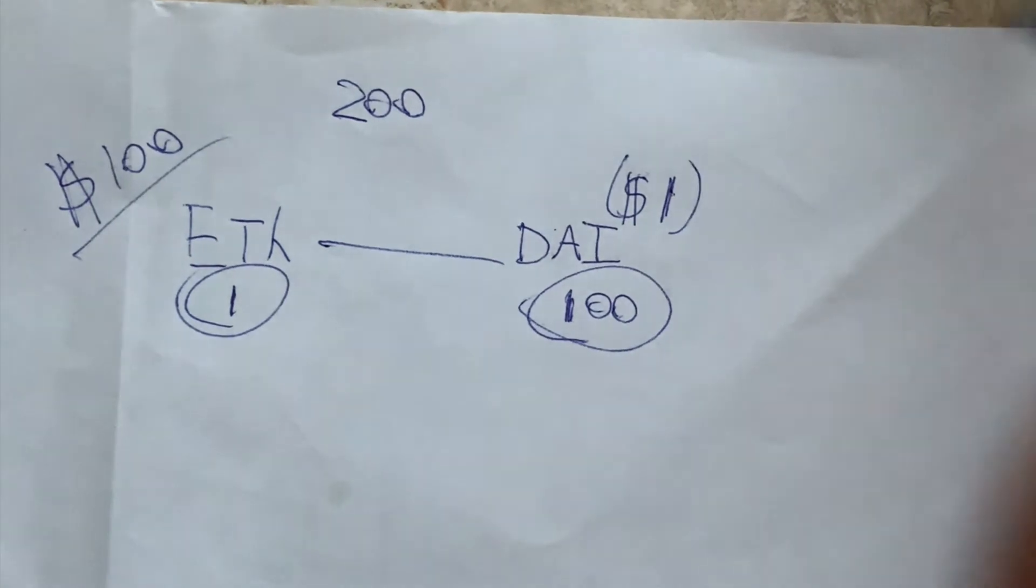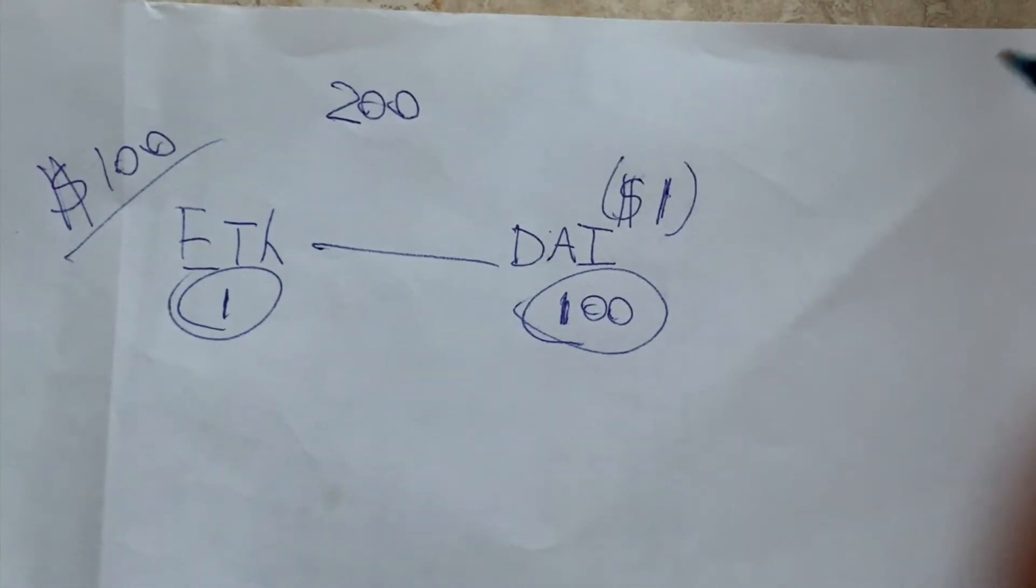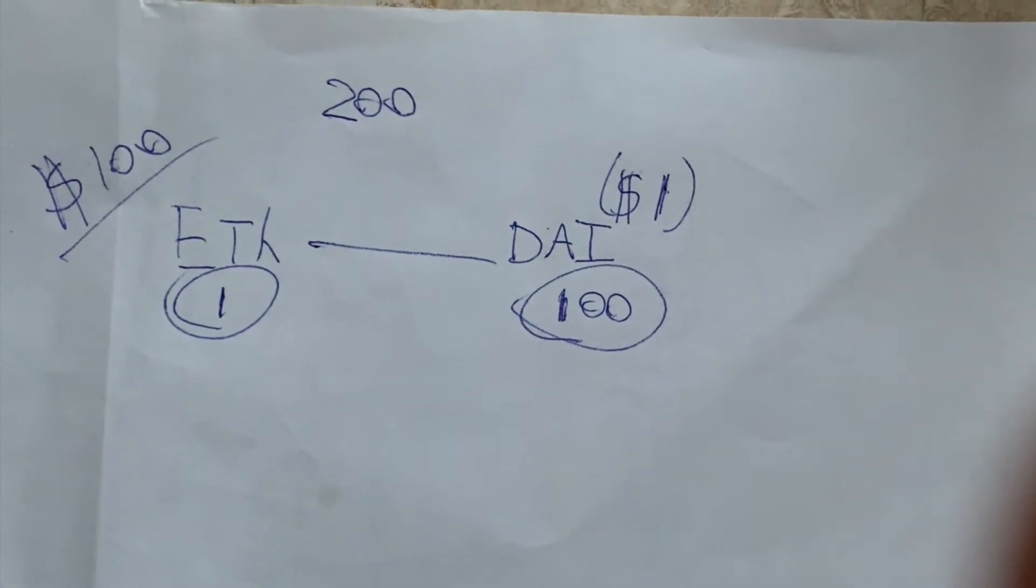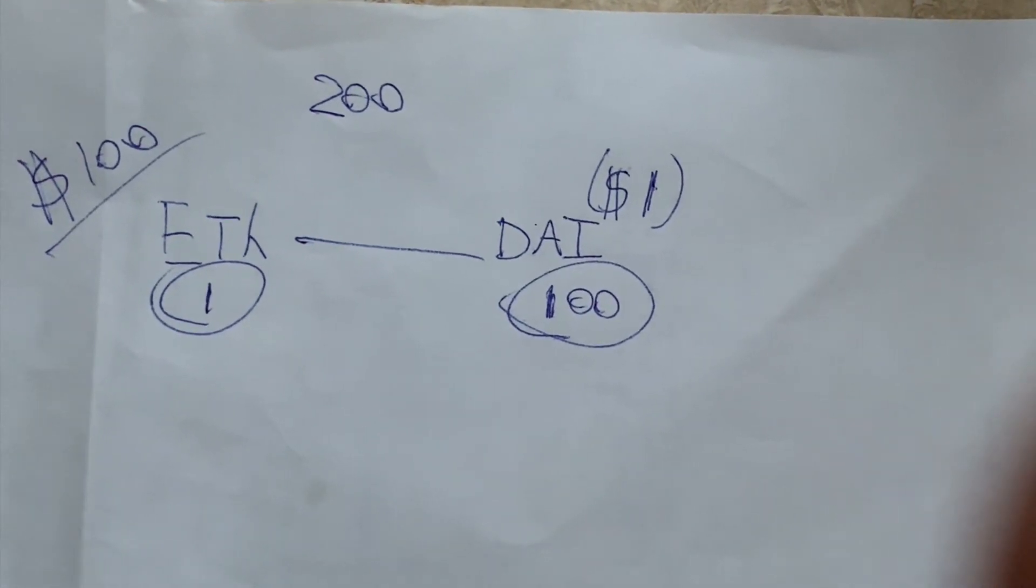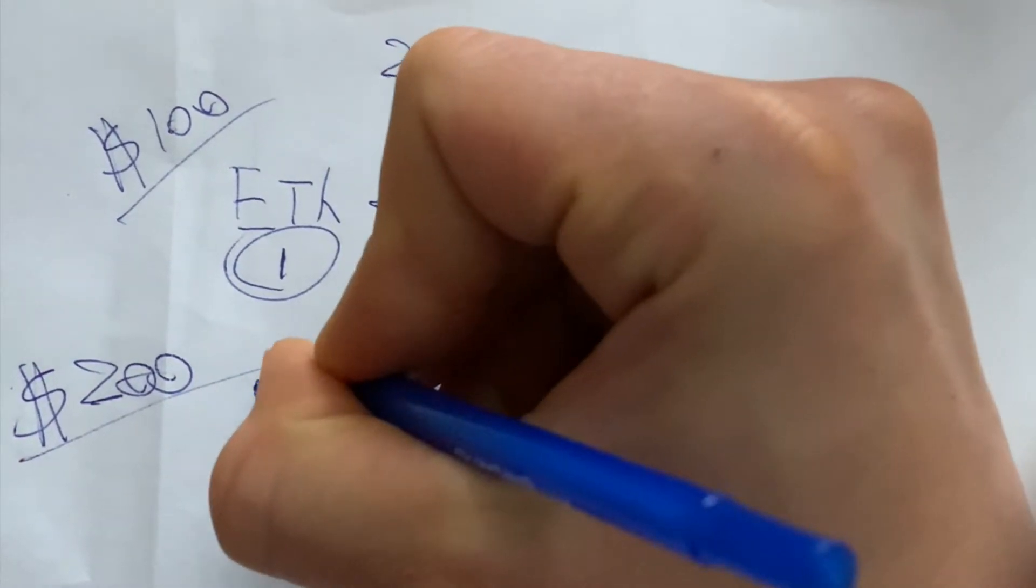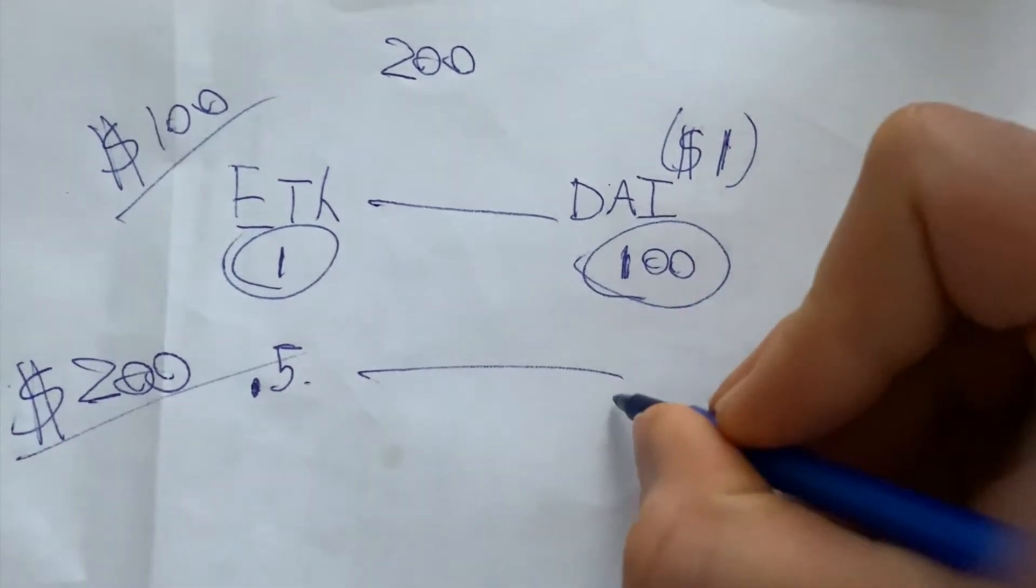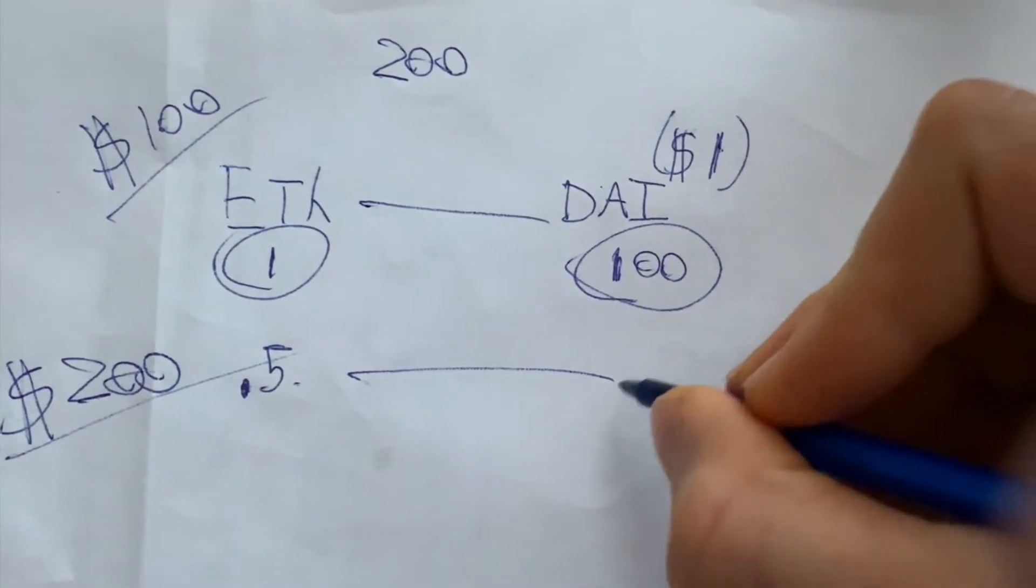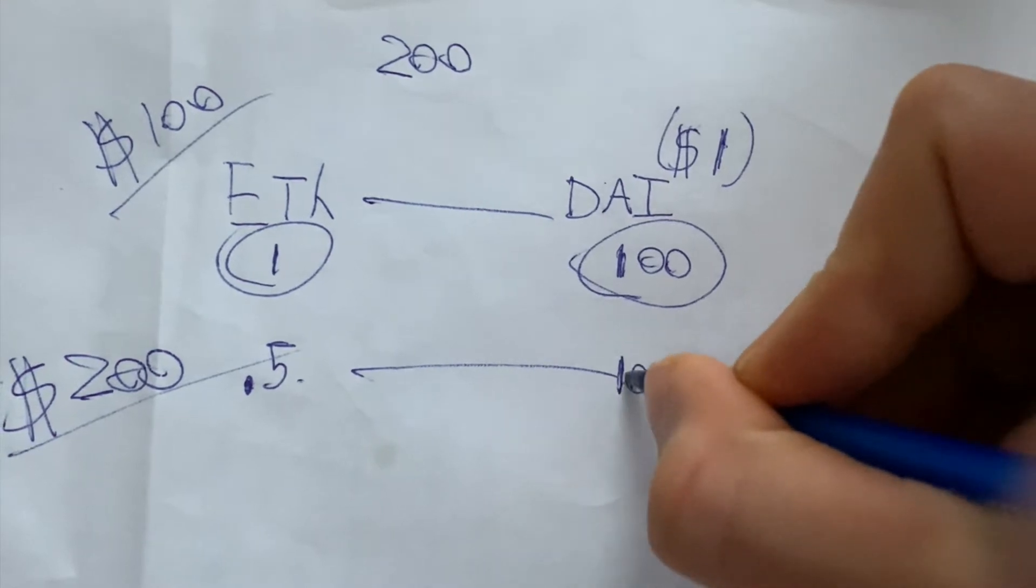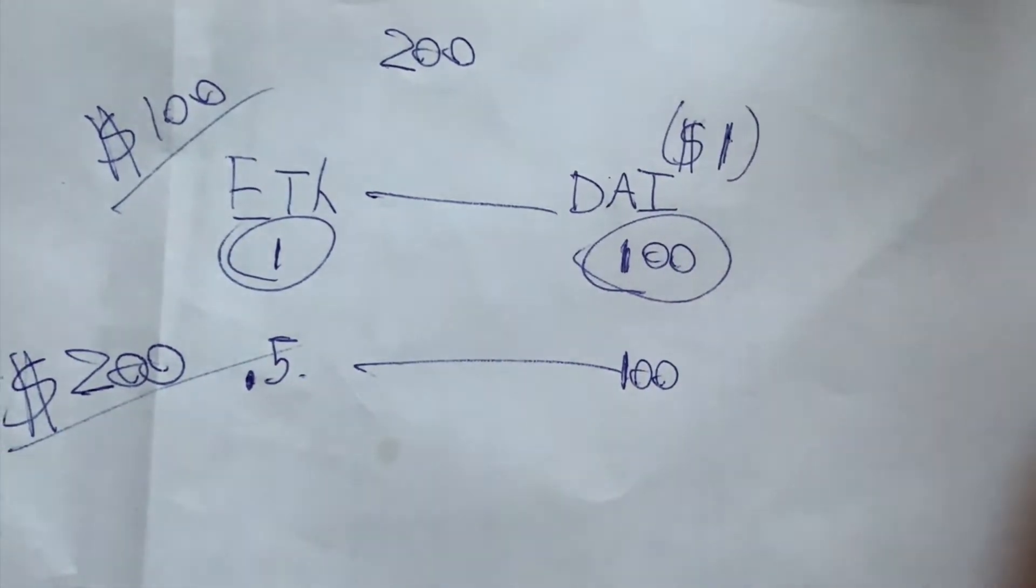So we have 100 DAI, one ETH. Now here's where impermanent loss comes in, which is what Bancor is looking to solve. I also did a video on it, you guys will see it in the description below. So ETH now is worth $200. So what does that do here? Now in the pool, there's only 0.5 ETH. DAI obviously stays a dollar, so we still have $100 worth of DAI, which is 100 DAI.